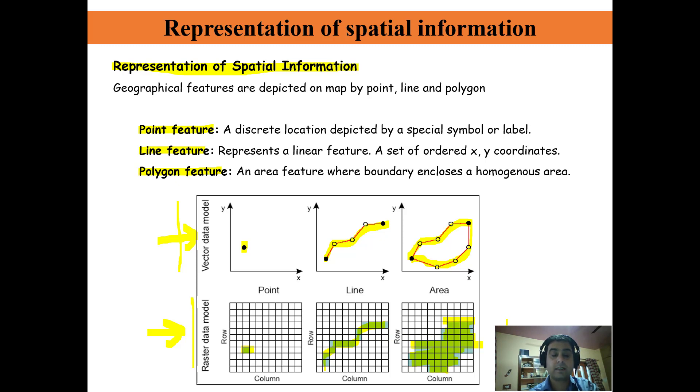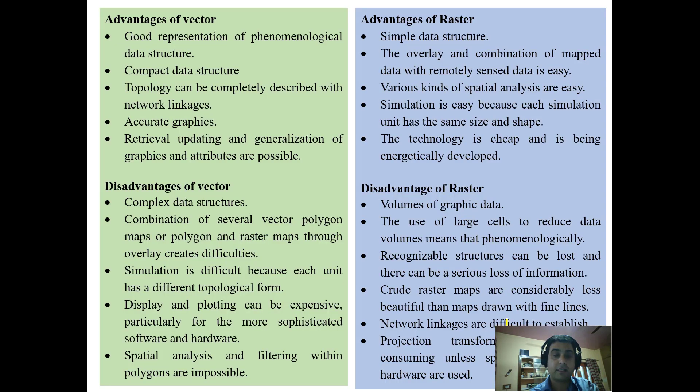This is how we understand vector data model and raster data model and representation of spatial information. Now there are certain advantages of vectors: good representation of phenomenological data structure, compact data structure, topology can be completely described with network linkages, accurate graphics, and retrieval and generalization of graphics and attributes is possible.